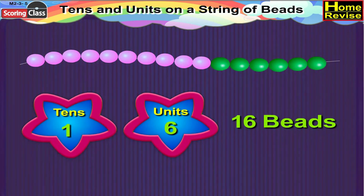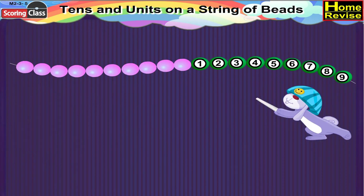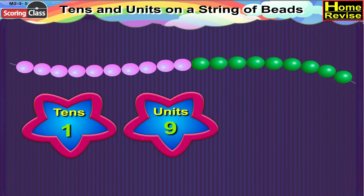In the next string, along with ten pink beads, there are nine green beads, which means it is one ten, nine units, or nineteen.